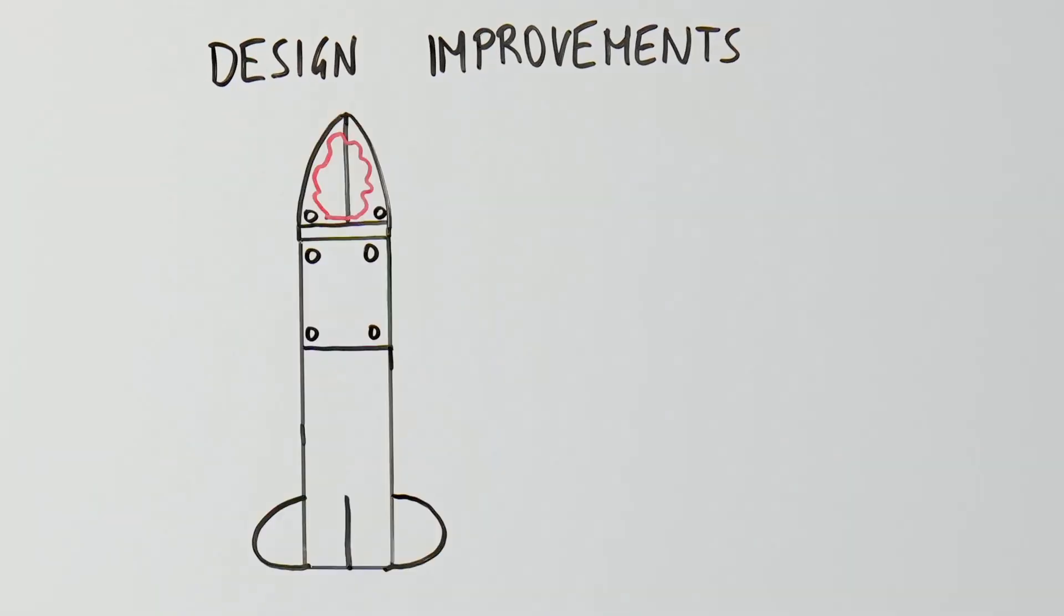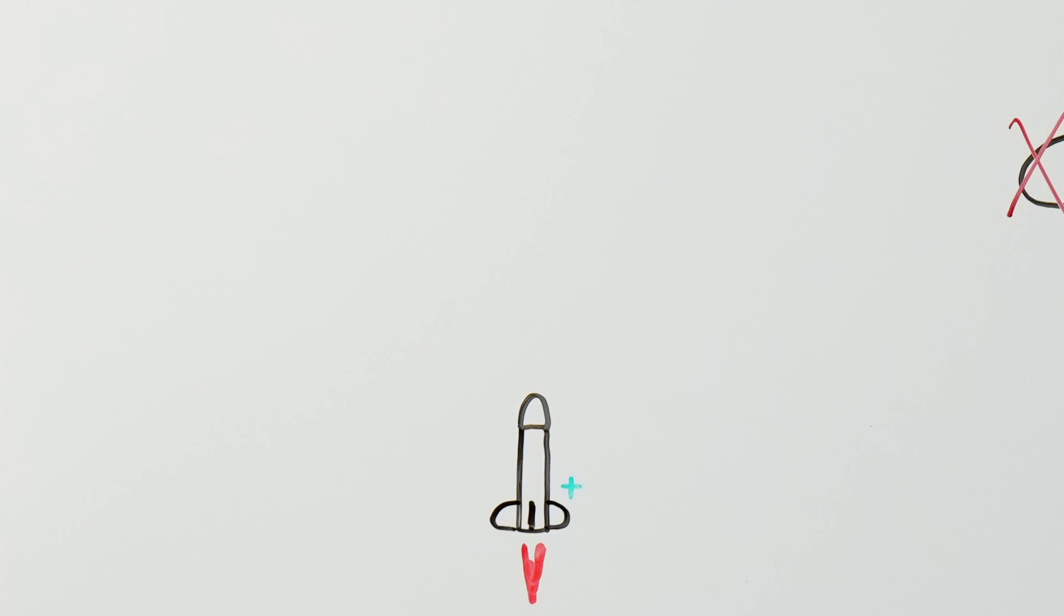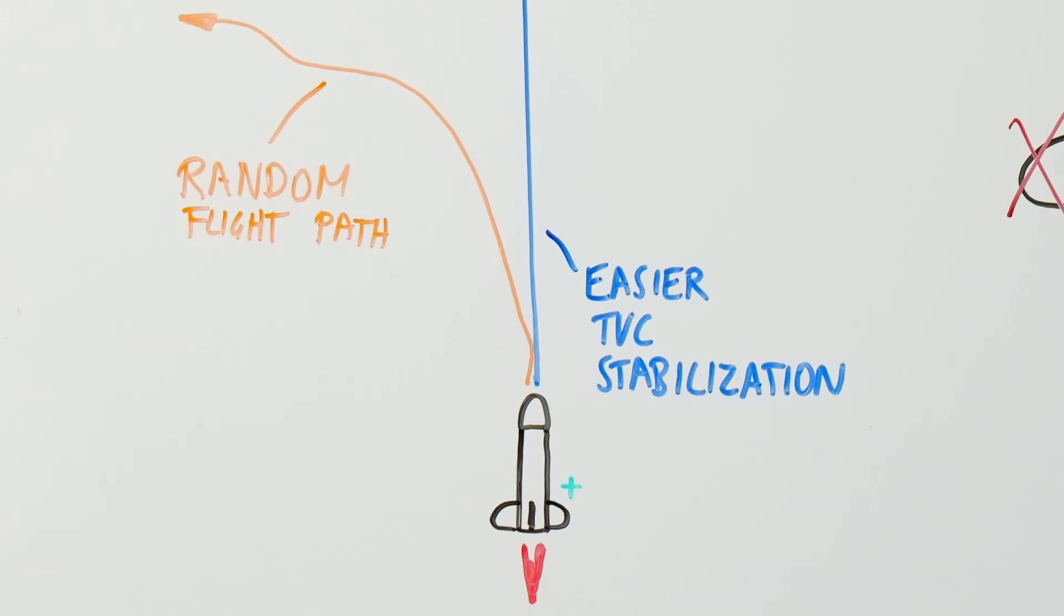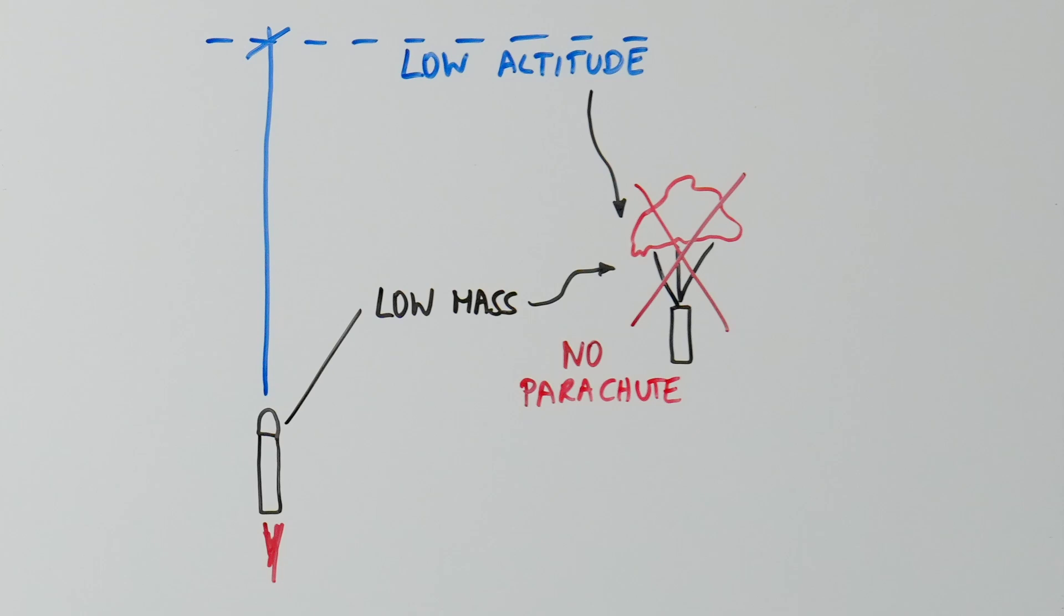I adapted the design to make it even lighter by removing the parachute deployment system and removing the fins. The fins were initially added for easier TVC stabilization, but to achieve the random flight paths we imagined, they were counterproductive. The parachute deployment system wasn't needed, as the low altitude and low weight of the rocket should allow it to survive a landing without one.